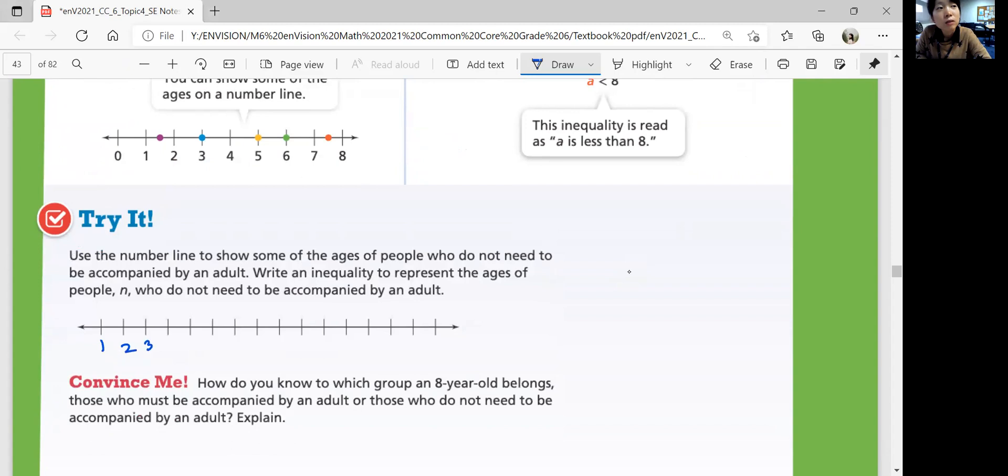Okay? So 8 would be okay. So let's do 1, 2, 3, 4, 5, 6, 7, and 8. 8 is also included, and any number greater than 8 is also okay. Not to have an adult accompanying them.